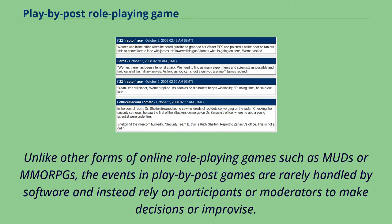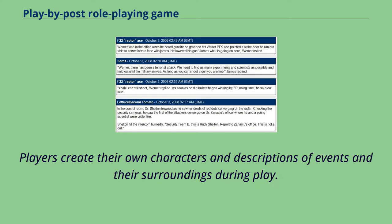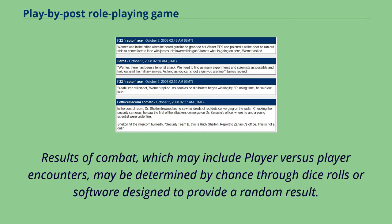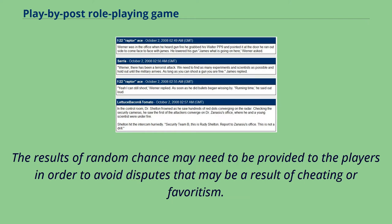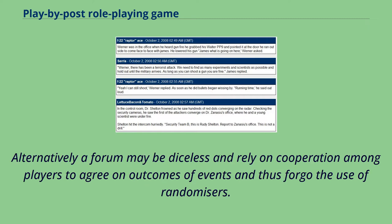Unlike other forms of online role-playing games such as MUDs or MORCs, the events in play-by-post games are rarely handled by software and instead rely on participants or moderators to make decisions or improvise. Players create their own characters and descriptions of events and their surroundings during play. Results of combat, which may include player versus player encounters, may be determined by chance through dice rolls or software designed to provide a random result. The results of random chance may need to be provided to the players in order to avoid disputes that may be a result of cheating or favoritism. Alternatively, a forum may be diceless and rely on cooperation among players to agree on outcomes of events and thus forego the use of randomizers.